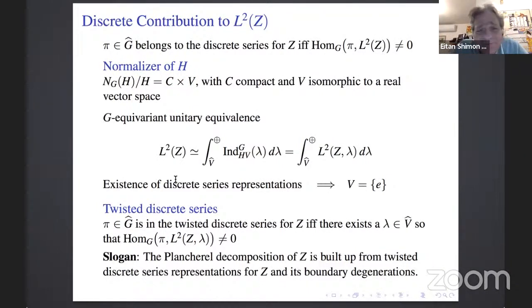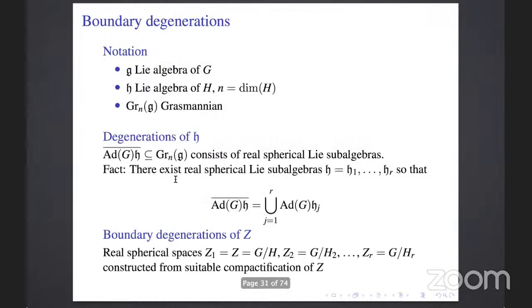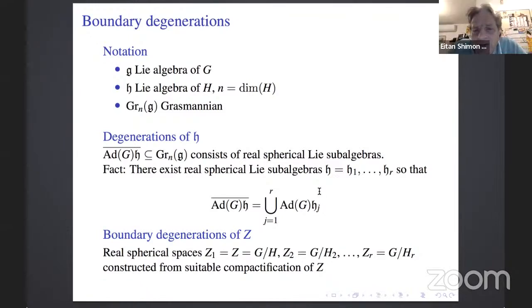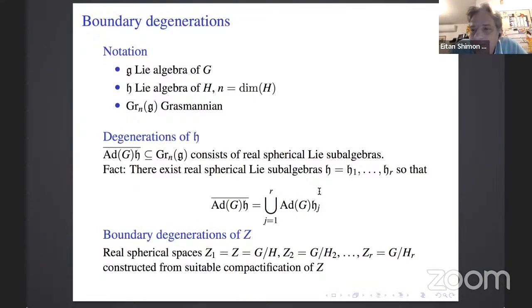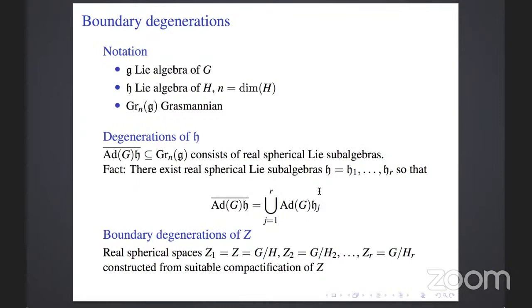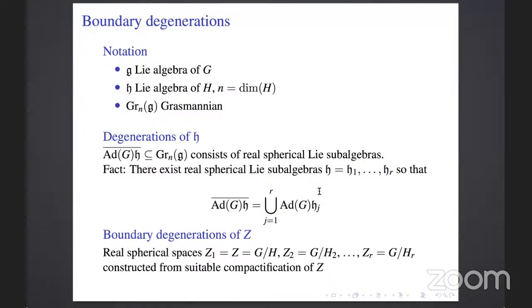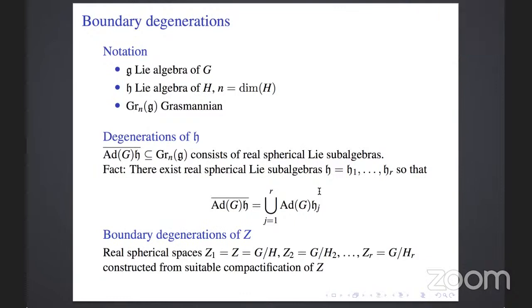Question about the criterion for π being discrete: Is there a Harish-Chandra-type criterion in this case? Answer: it is expected but not yet known — only partial results are known. A rank condition is expected, similar to the group case.